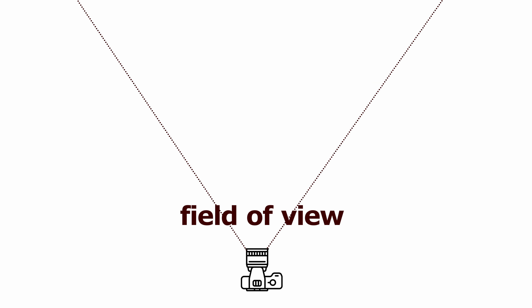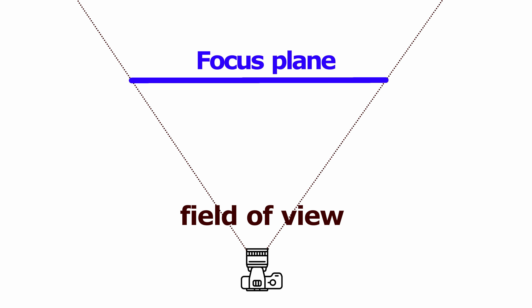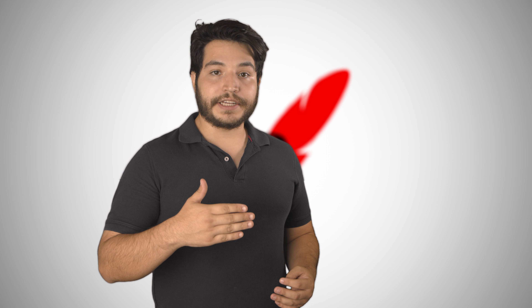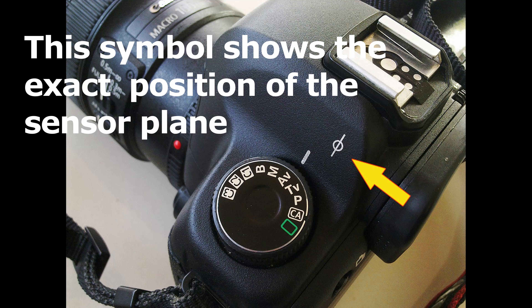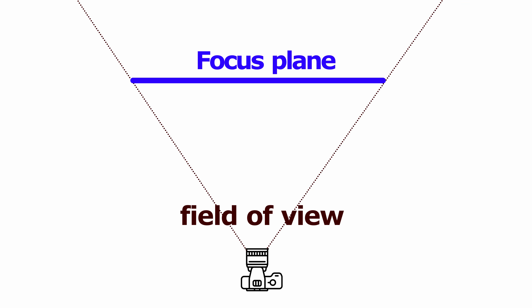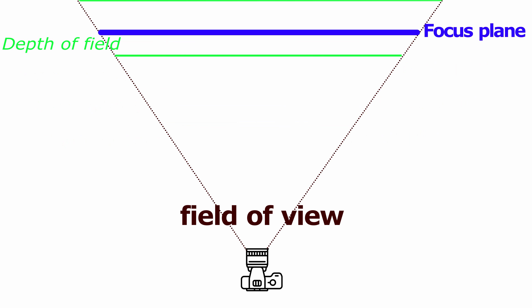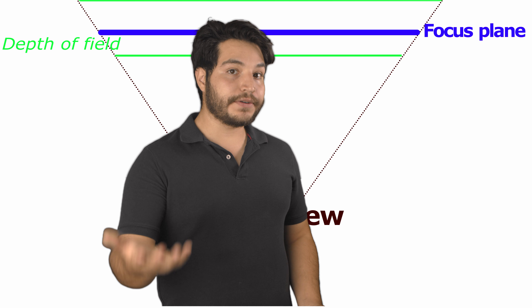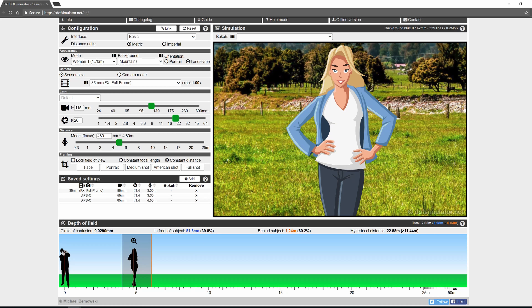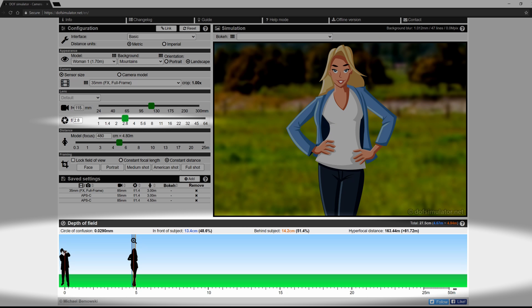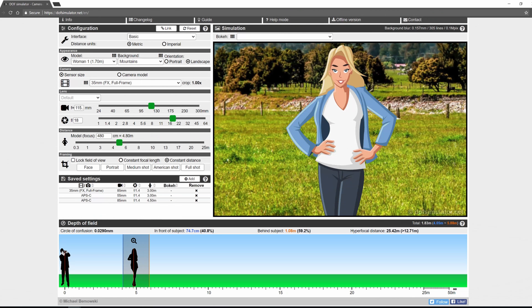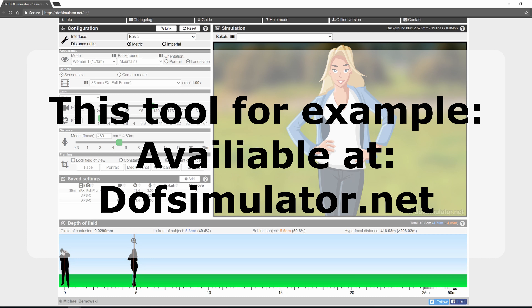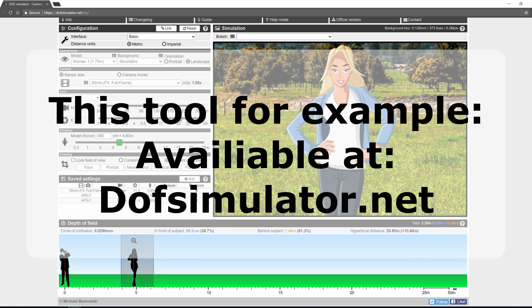When you focus a lens, a singular plane parallel to the projection plane of the lens — in this case the sensor — is in focus. Depth of field is the area around that plane that has acceptable sharpness to also be considered in focus. Wider apertures have a smaller depth of field. You can even calculate just how much will be in focus with a depth of field calculator.